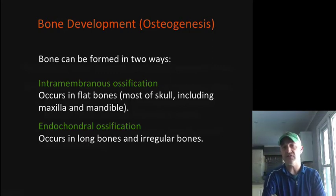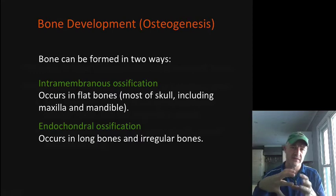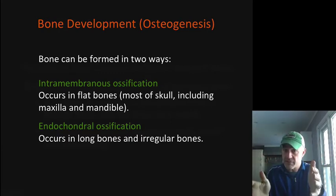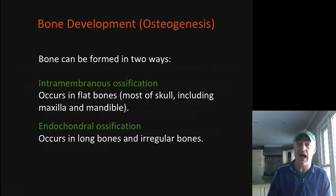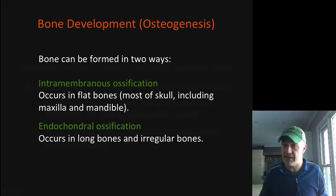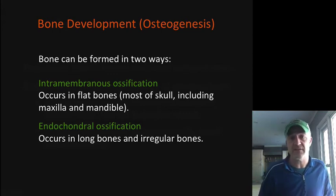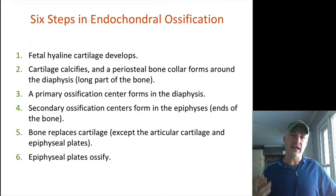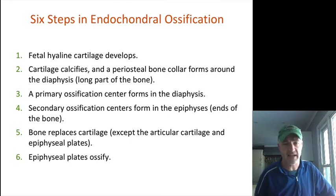Bone can be made two different ways. Intramembranous ossification forms the skull bones and clavicles — a membrane surrounds some mesenchyme, osteoblasts differentiate, and bone forms out to that membrane and then remodels into its final form. Endochondral ossification starts with a hyaline cartilage template and converts that to bone. This happens in most other bones — all long bones, limb bones, and the majority of bones throughout the body.